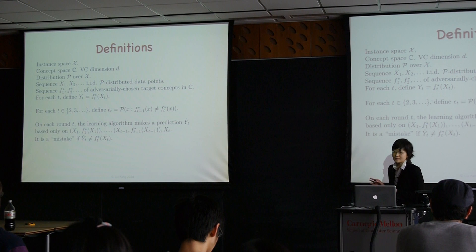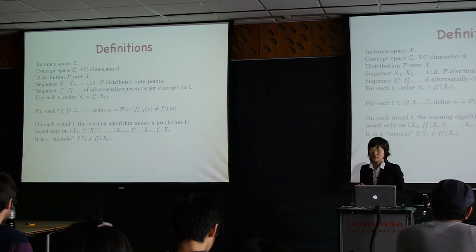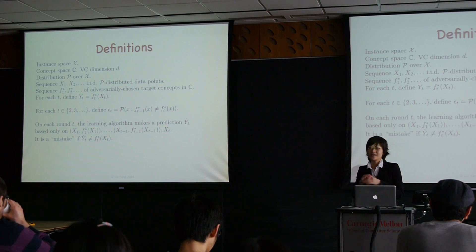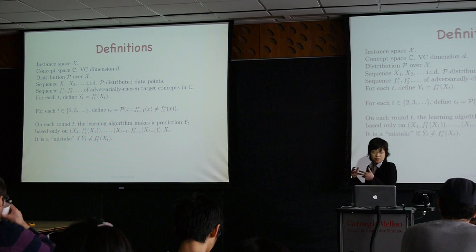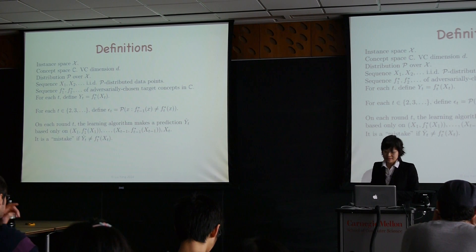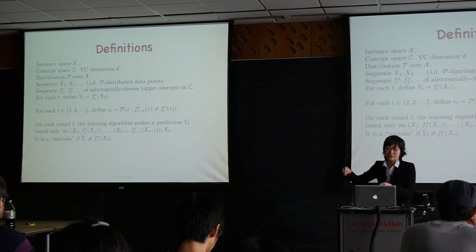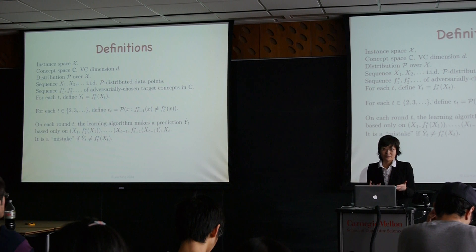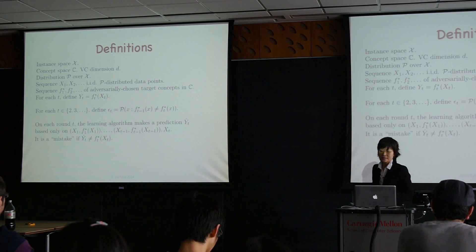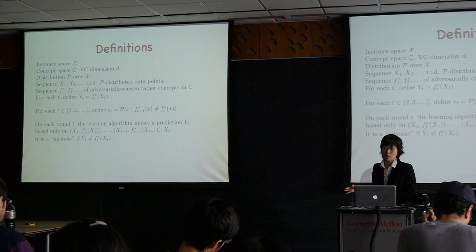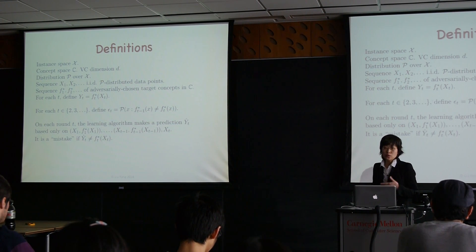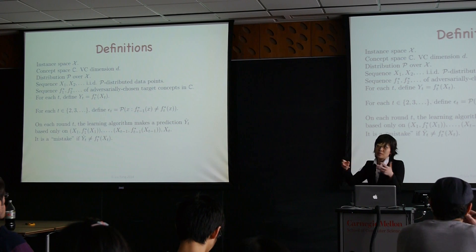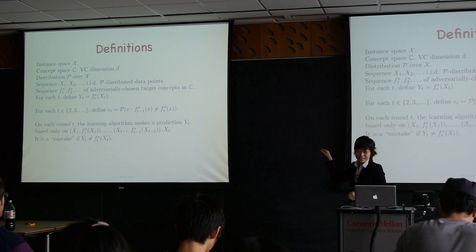We denote by y_t the t-th target function for the classification problem at time point t. To describe the amount by which the target drifts from one time to the next, we let epsilon_t denote the probability that the t-th target disagrees with the t-1 target on a random point drawn from the underlying distribution. The protocol is that the learning algorithm observes each example x_t in sequence and must make a prediction for y_t based only on past data and the current x_t. It can then observe the true value of y_t, so it knows whether it made a mistake. We are interested in making a small number of mistakes as a function of the number of data points observed so far, capital T.